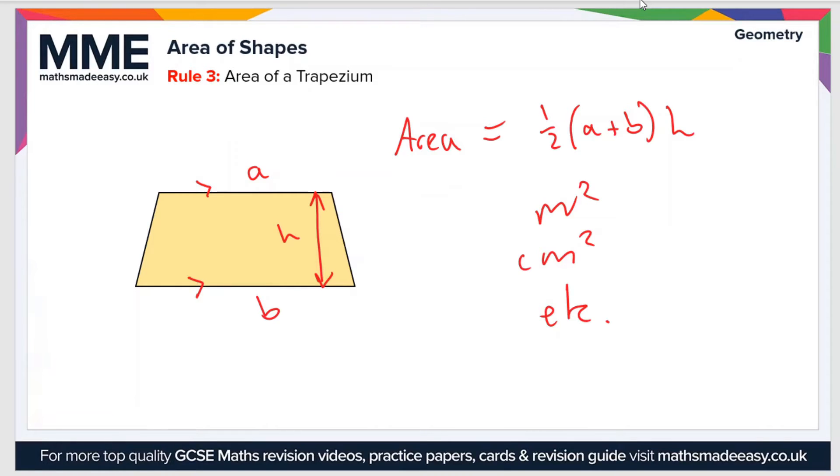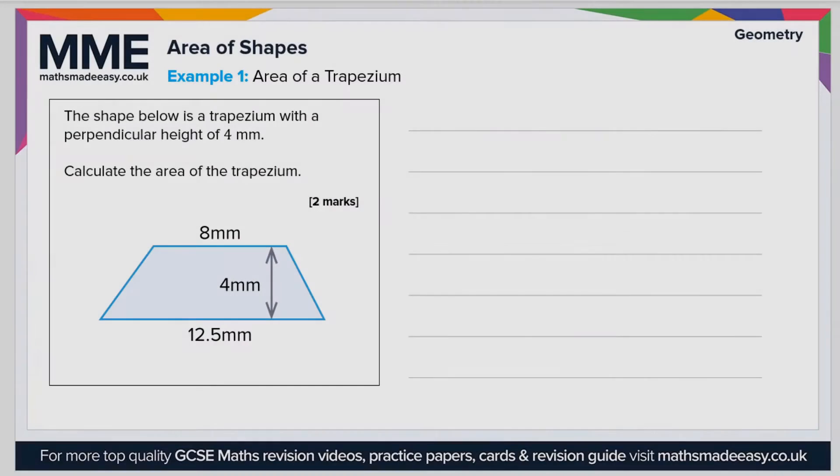So if we have a look at an example now: the shape below is a trapezium with a perpendicular height of 4 millimeters. Calculate the area of the trapezium. Let's just write the formula for the area of the trapezium up here again, and that's half a plus b times h. So what's a, what's b, and what's h? Well, a and b are the two parallel sides.